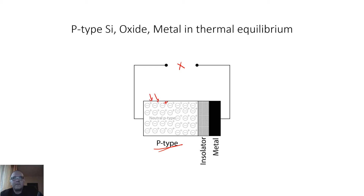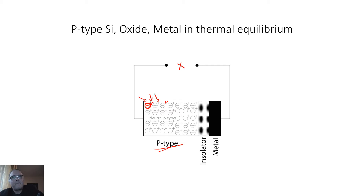The semiconductor is neutral in terms of charge, because for every hole — which is a positive mobile charge — there is a corresponding negative immobile charge of the dopant atom ion. So we have equal quantities of negatively charged ions and mobile holes. Then here is the insulator — for example silicon oxide — and here is the metal.